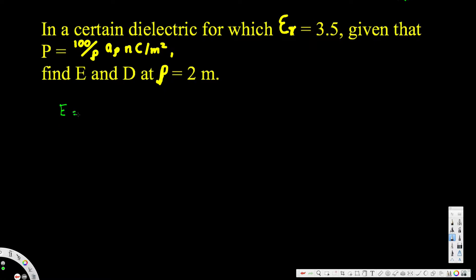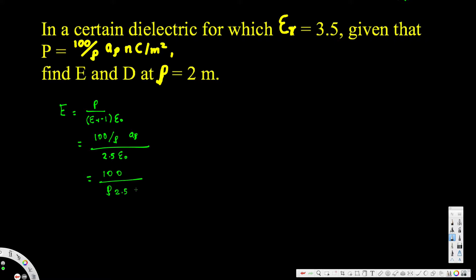To find E we can use the formula E equals P divided by (epsilon_r minus 1) times epsilon_naught. We know P is equal to 100 divided by rho a_rho, and epsilon_r minus 1 is 3.5 minus 1, that's 2.5 times epsilon_naught. So we get 100 divided by rho times 2.5 epsilon_naught, and epsilon_naught is given by 10 to the power of minus 9 divided by 36.